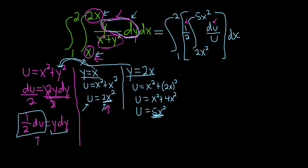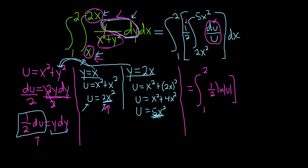Let's go ahead and integrate this. We still have our outer integral from 1 to 2. Integrating 1/u with respect to u gives us ln absolute value of u, so we get 1/2 ln|u| evaluated from 2x squared to 5x squared, then dx. It's all about notation and taking your time — you have to go kind of slow.